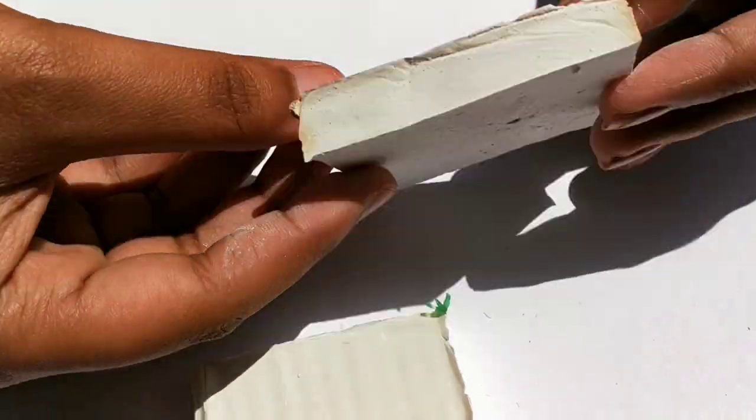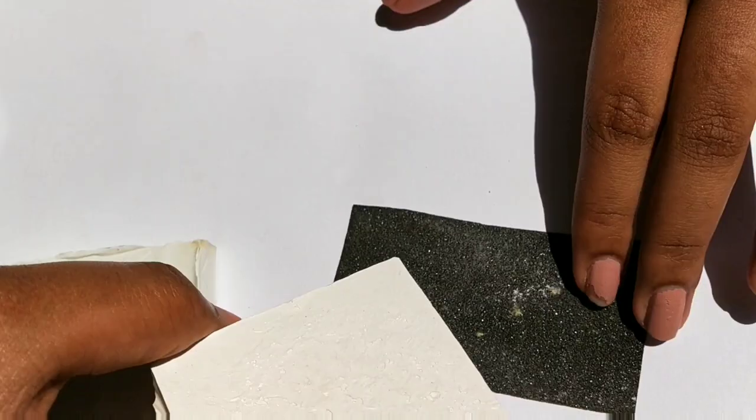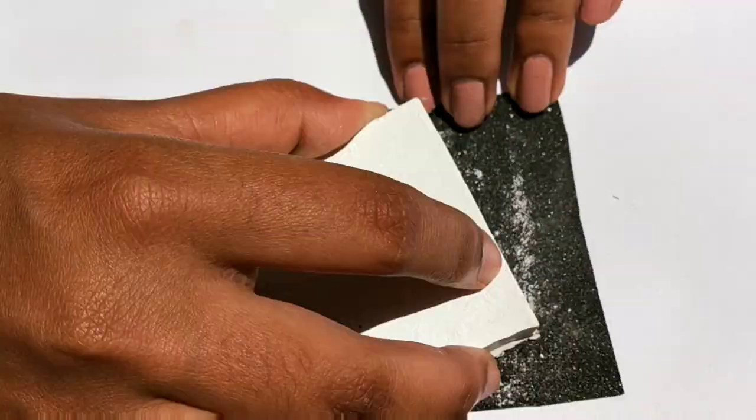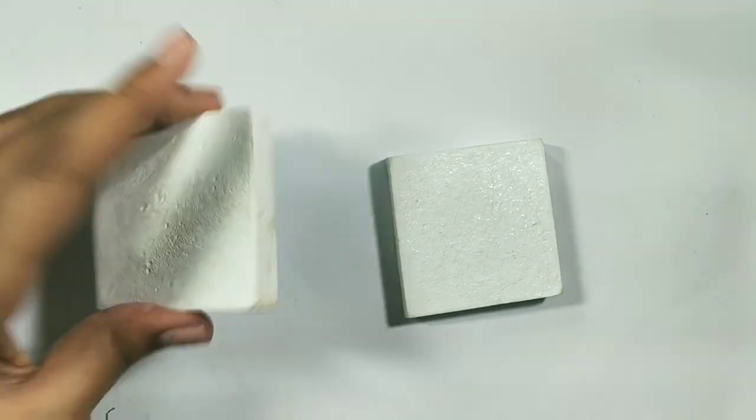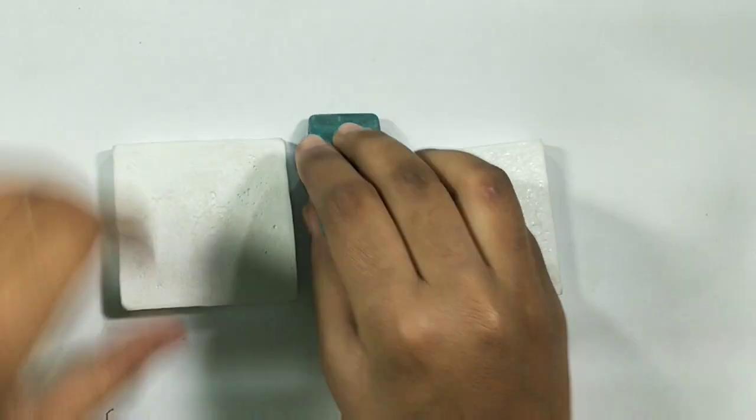As you can see, the edges are sharp and uneven. For this, take a sandpaper and rub it to get the desired smooth edges. After smoothening it, it will look like a perfect square.